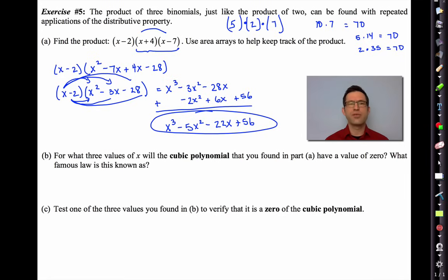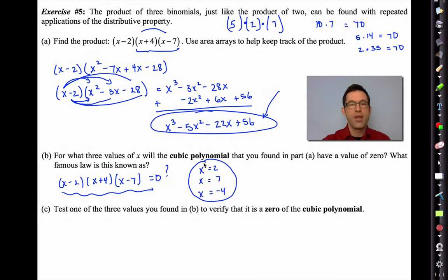Letter B asks, for what three values of x will the cubic polynomial that you found in part A have a value of 0? What famous law is this known as? Well, keep in mind that this is exactly the same, just written in a different form, as this. The question is, well, what would make this expression equal to 0? Well, if I put x equals 2 in, it would, because it would make this thing equal to 0. If I put x equals 7 in, it would, because it would make this equal to 0. Maybe the trickiest one is if I put x equals -4 in, it would make that equal to 0. This thing is known as the zero product law.